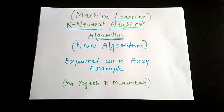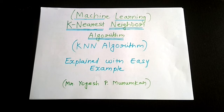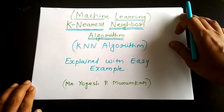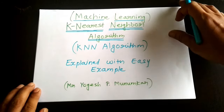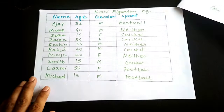Let's say we want to create a program that predicts if someone likes cricket, football, or neither. For this example, we assume a person cannot like both cricket and football. We're going to walk through KNN with a very simple example.